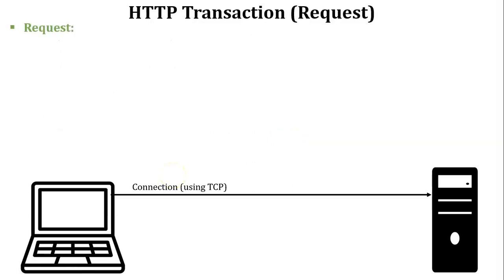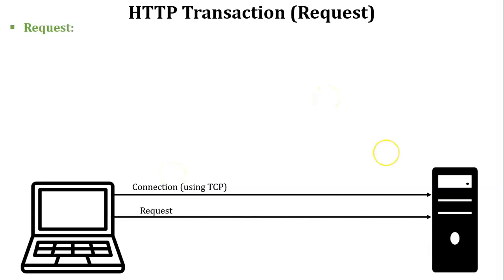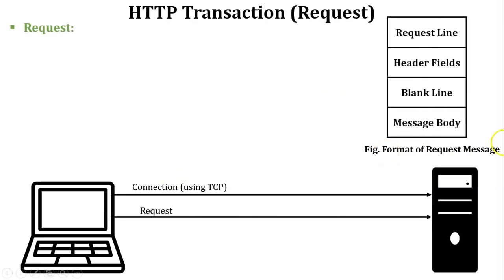The next component is request. The client sends a request to the server. This is the format of the request message. There are four parts in the request message format: the first is the request line, the second is the header field, the third is the blank line, and the fourth is the message body.